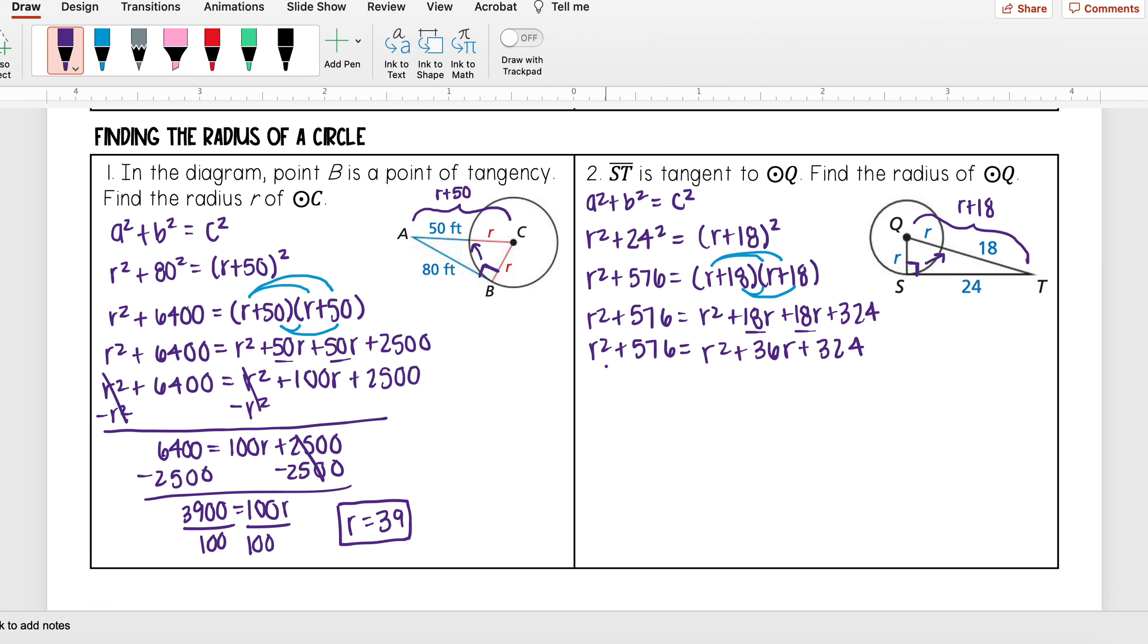Now I want to get R by itself. I noticed that I have an R² on both sides, so I can subtract R² from both sides and cancel both of those out. So I'm left with 576 = 36R + 324.